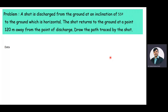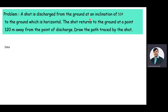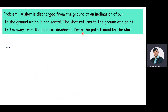The given problem is: a shot is discharged from the ground at an inclination of 55 degrees to the ground which is horizontal. The shot returns to the ground at a point 120 meters away from the point of discharge. Draw the path traced by the shot.